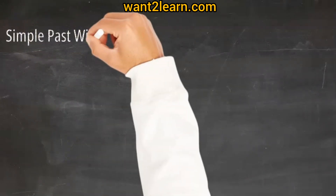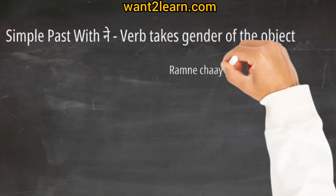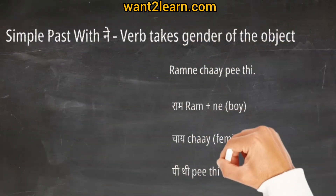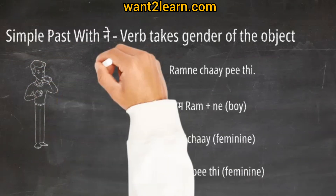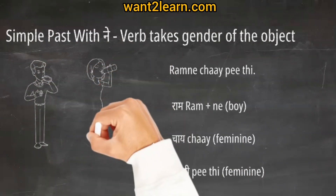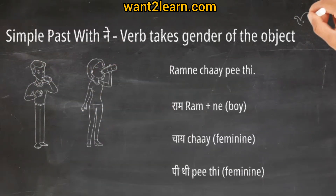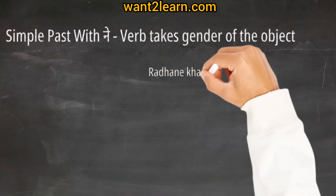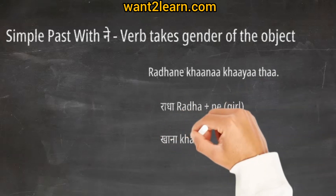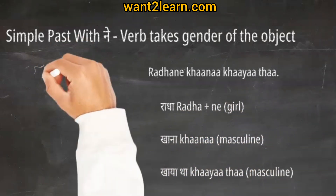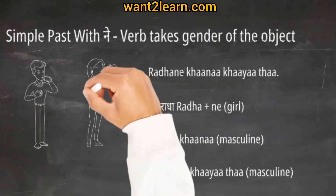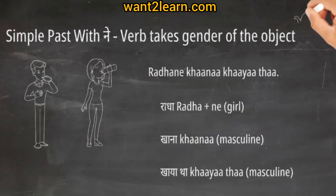Simple past present with ne: the verb takes the gender of the object. Ram ne chai piti. Ram plus ne — boy. Chai is feminine, piti is feminine. Radha ne khaana khaya tha. Radha ne — girl. Khana masculine. Khaya tha masculine.